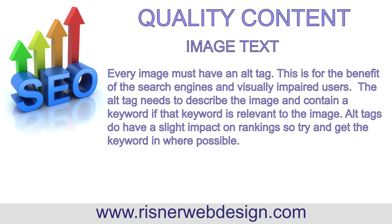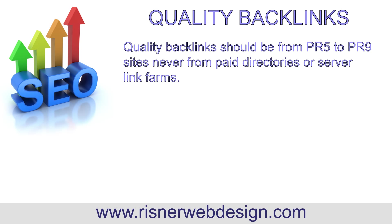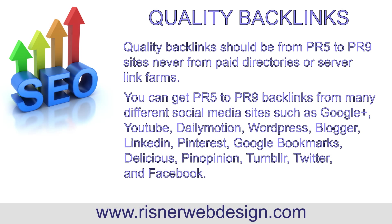Next we will proceed to the quality backlinks category. Quality backlinks should be from PR5 to PR9 sites and never from paid directories or server link farms. You can get PR5 to PR9 backlinks from many different social media sites such as Google+, YouTube, DailyMotion, WordPress, Blogger, LinkedIn, Pinterest, Google Bookmarks, Delicious, Penopinion, Tumblr, Twitter, and Facebook. Now let's proceed to the third category, which is quality videos.